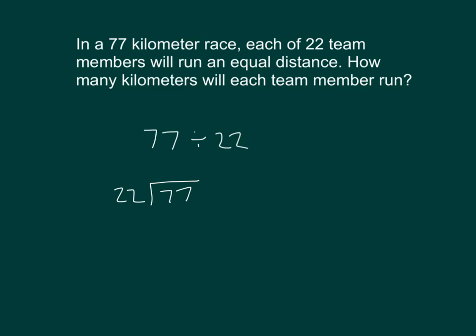22 can't go into 7, 22 can go into 77. It goes into 77 three whole times, because 3 times 22 is 66. 77 minus 66 is 11.